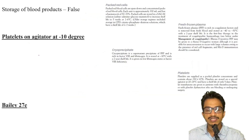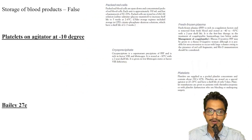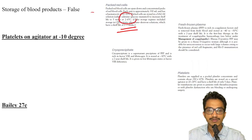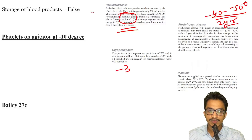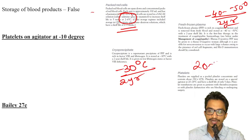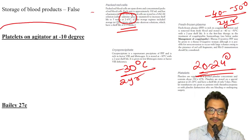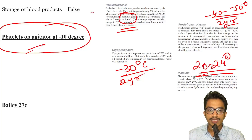Blood transfusion products are very important: PRBCs are stored in CPD for a shelf life of two to three weeks at 2-6°C; FFP is stored at -40 to -50°C with a two-year shelf life; cryoprecipitate is stored at -30°C for two years; and platelets are stored at 20-24°C on agitators — not at negative temperatures.